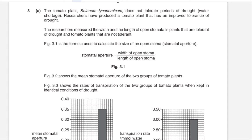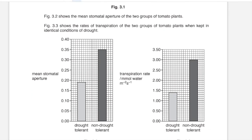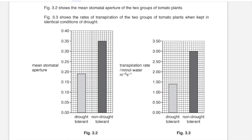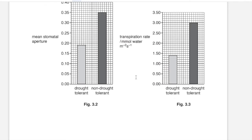Question 3A: the tomato plant Solanum lycopersicum does not tolerate periods of drought. Researchers have produced a tomato plant with improved tolerance of drought. The researchers measured the width and length of open stomata in drought-tolerant and non-tolerant plants. Figure 3.1 is a formula used to calculate stomatal aperture — you divide the width of open stomata by its length. Figure 3.2 shows the mean stomatal aperture of two groups, and figure 3.3 shows rates of transpiration. Drought tolerant plants would have a lower mean stomatal aperture and a lower rate of transpiration, meaning lower water loss.